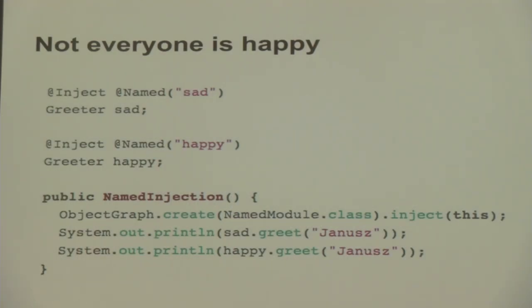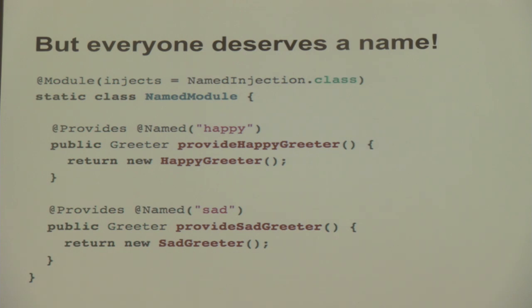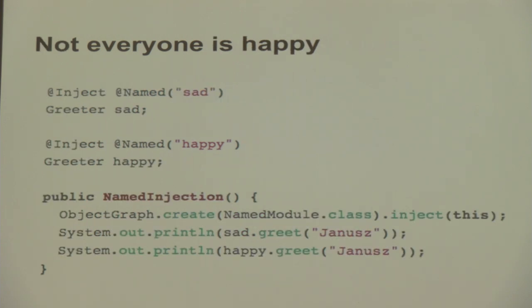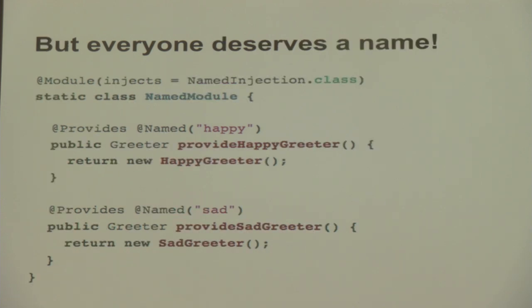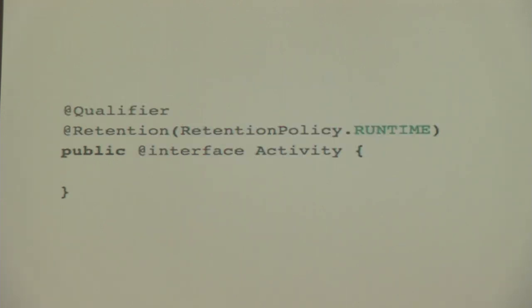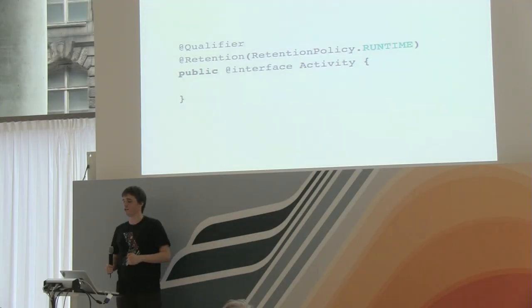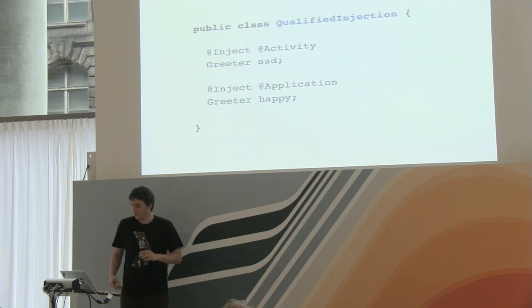Not everyone is happy, so we also have the @Named annotation from javax.inject. Based on this annotation we can inject several different dependencies into our app. We don't have to use @Named — we can create our own qualifier annotation. What @Named really is, is a @Qualifier annotation, so you can create qualifier annotations of your choice and inject different implementations based on them.